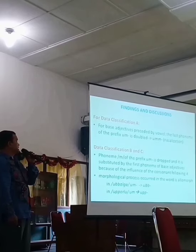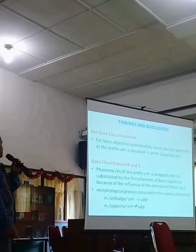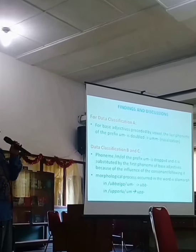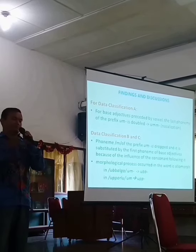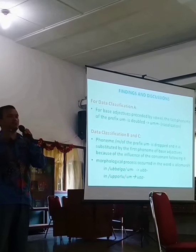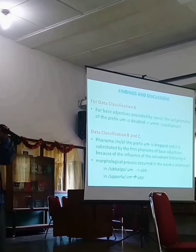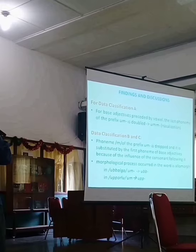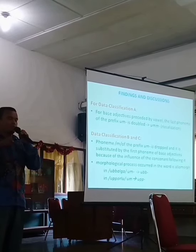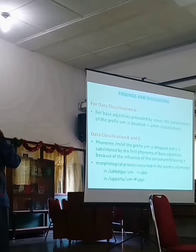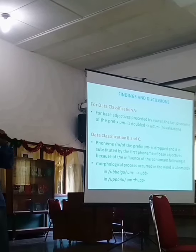Here are the findings. Based on my analysis, the first finding is that phoneme M in prefix 'um' is doubled if the first phoneme of the base adjective is a vowel — like 'ias,' prefix 'um' plus 'ias' becomes not 'umias' but 'ummias.' Based on classification B and C, phoneme M of the prefix 'um' is dropped due to an assimilation process — for example, 'um' plus 'balga' does not become 'umbalga' but 'ubalga.' Phoneme M is dropped and replaced by the first phoneme of the base adjective.